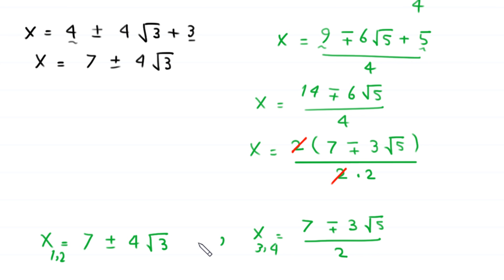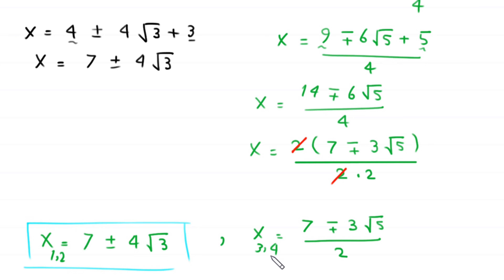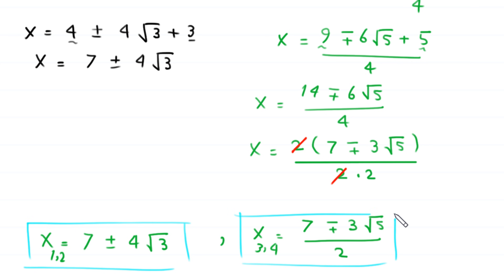So we have four solutions for this equation: x = 7 ± 4√3 and x = (7 ∓ 3√5)/2.